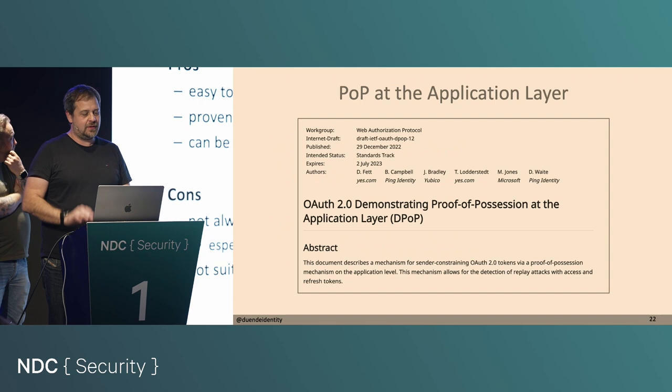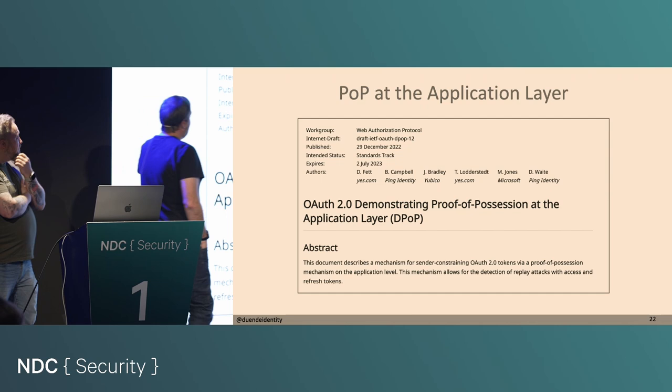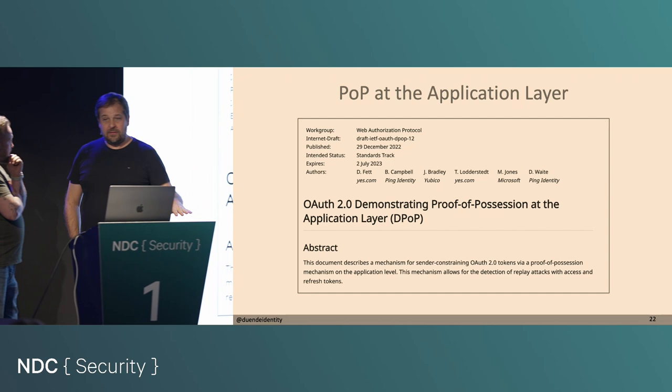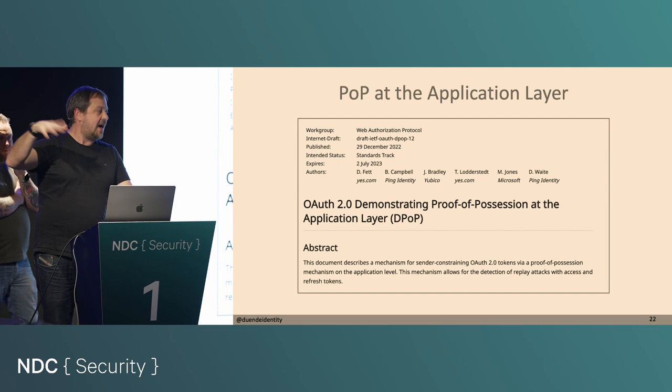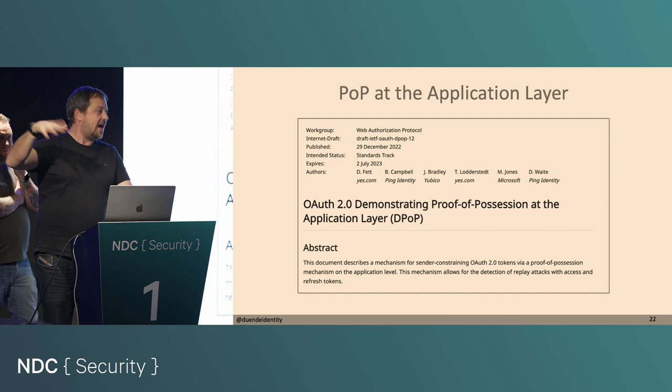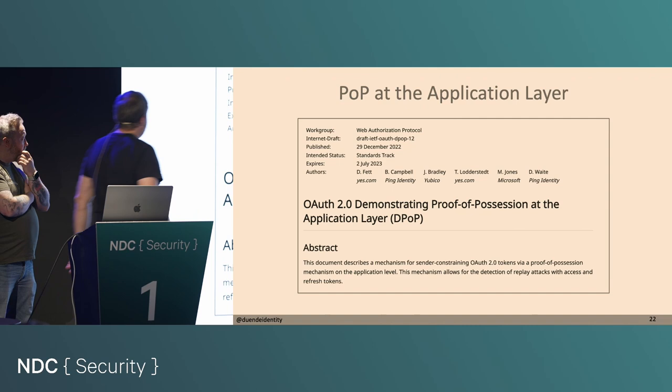So what's the alternative? There's a new spec. Instead of trying to do this at the transport level, it tries to do it at the application level — meaning you don't need MTLS, PKI, and all that stuff up and running. It's called DPoP. It's in the last draft — the final call, as the IETF calls it — so it's going to be released very soon.